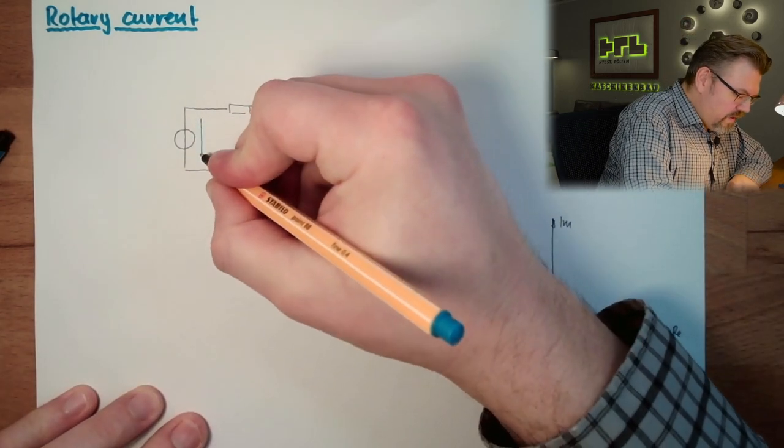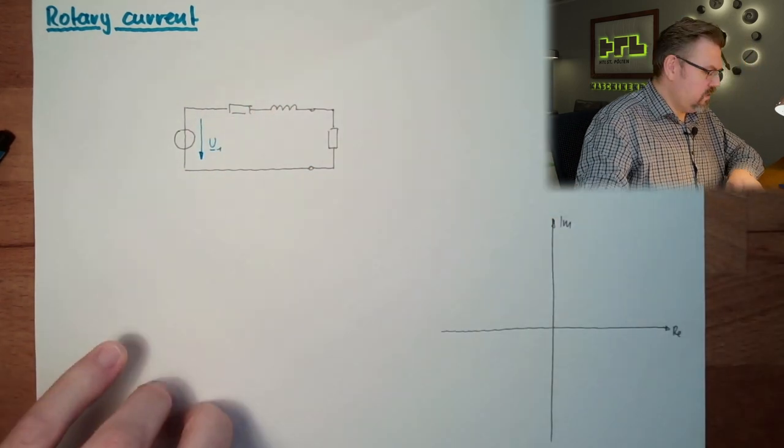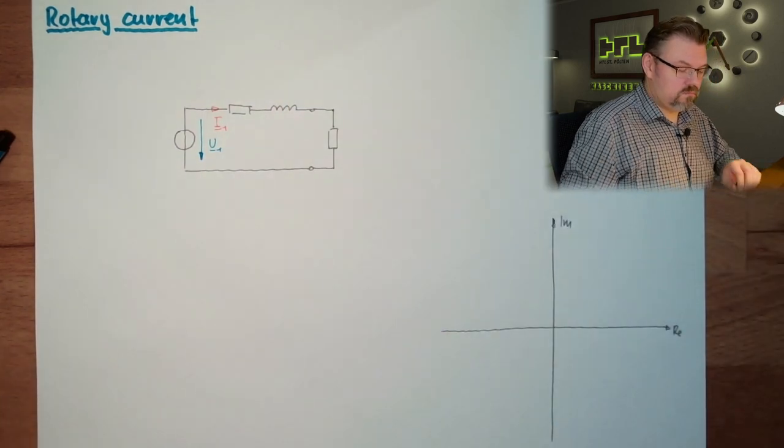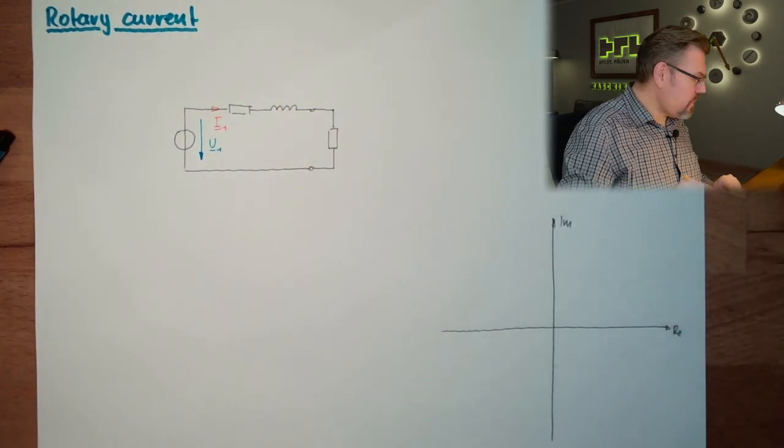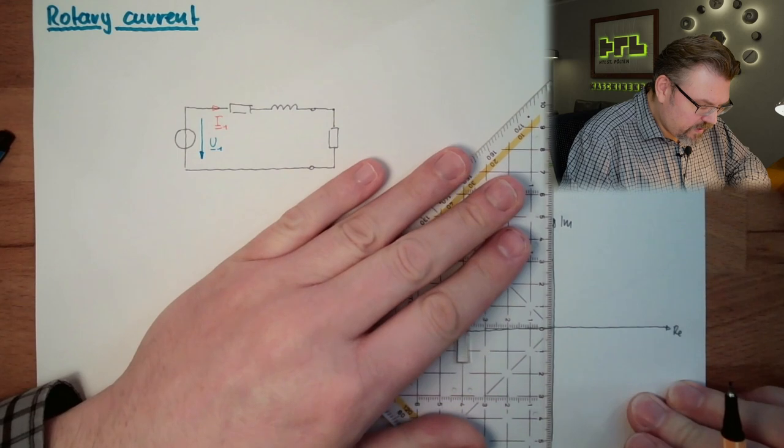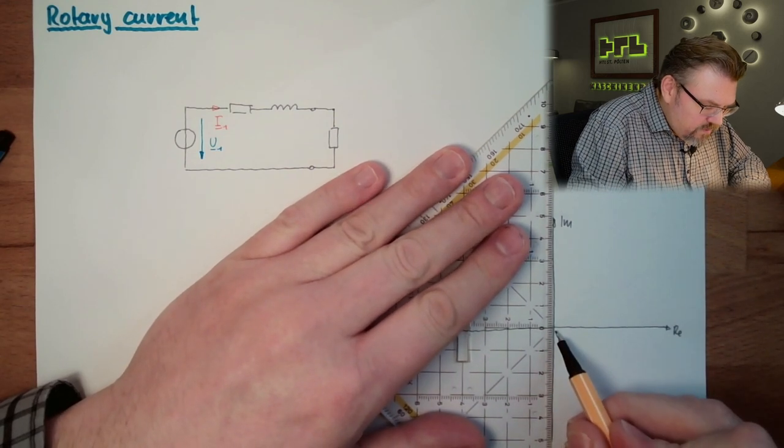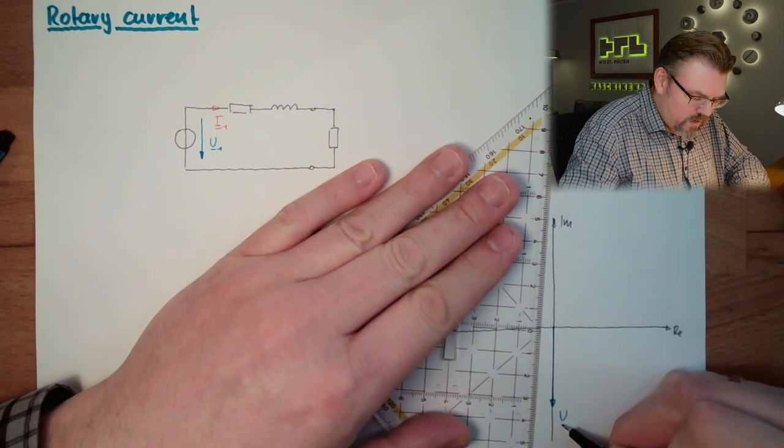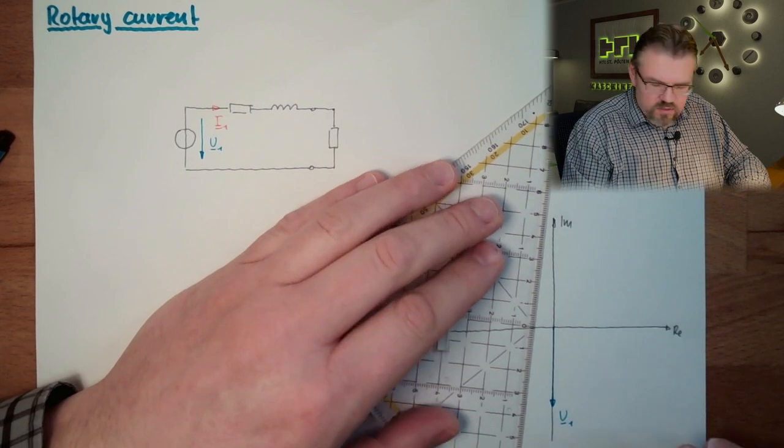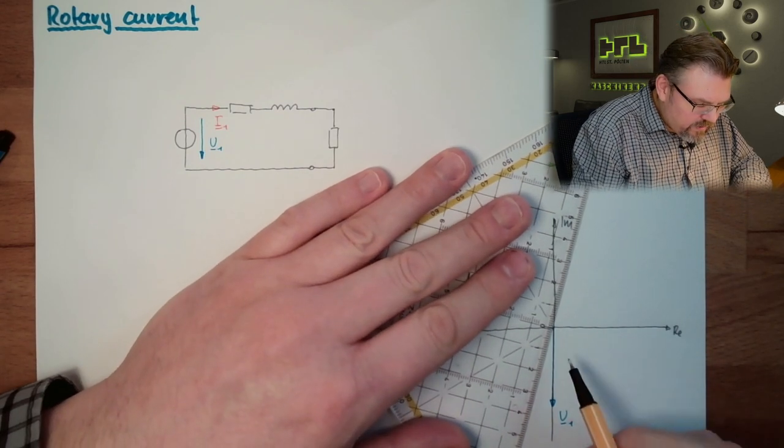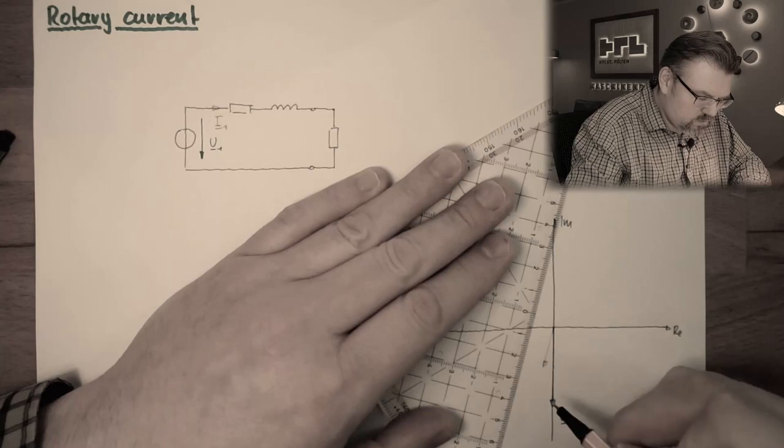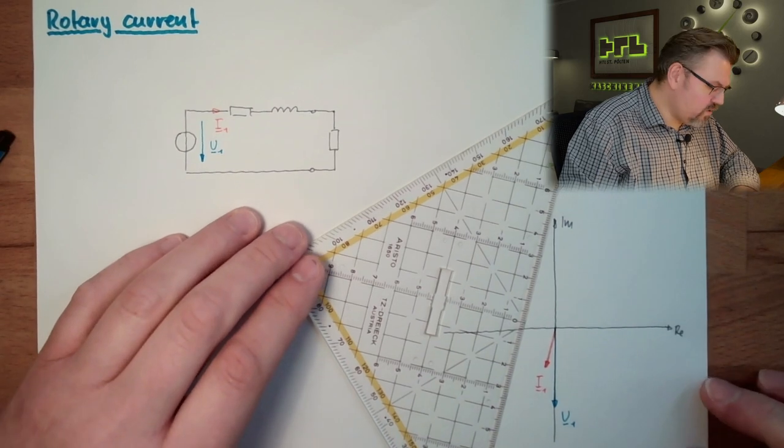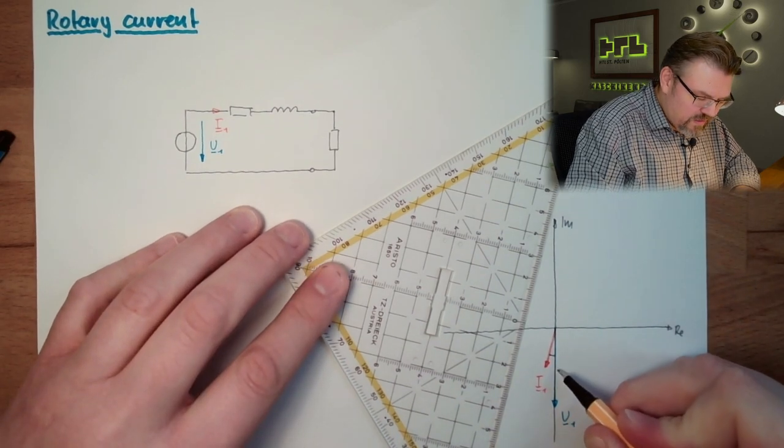So we have here an AC voltage U1, an alternating current voltage, and we have an alternating current I1. I am going to draw this in a pointer diagram now. Here we have U1 and we have a certain I1. And in between, depending on the burden here, how much phase shift and so on, we have a phase angle φ1.